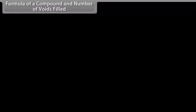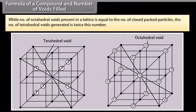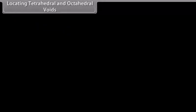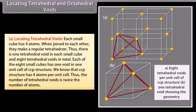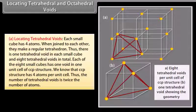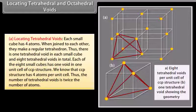Formula of a compound and number of voids filled: the number of octahedral voids present in a lattice is equal to the number of close-packed particles. The number of tetrahedral voids generated is twice this number. Locating tetrahedral voids: each small cube has four atoms; when joined to each other they make a regular tetrahedron. Thus there is one tetrahedral void in each small cube and eight tetrahedral voids in total. Since the CCP structure has four atoms per unit cell, the number of tetrahedral voids is twice the number of atoms.